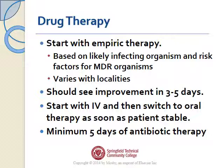For drug therapy, patients are always started on empiric therapy based on the likely infecting organism and risk factors for multi-drug resistant organisms. It varies with locality — for example, at Hartford Hospital a critically ill patient might receive vancomycin, cefepime, and tobramycin or Levaquin, while at Baystate Medical Center the typical empiric therapy is vancomycin and Zosyn. With antibiotics, you should see a reduction in fever, increased ease of breathing, and improved oxygenation in three to five days. If the patient isn't improving in about two days, I'm going to be concerned that the wrong antibiotic was chosen.